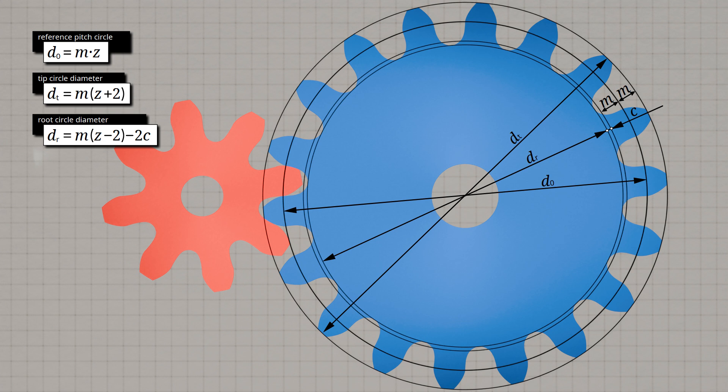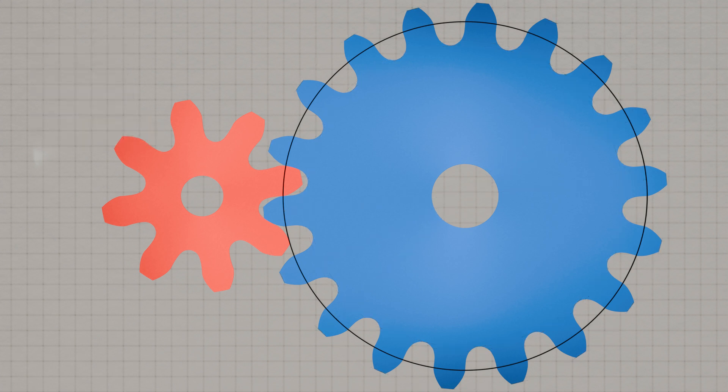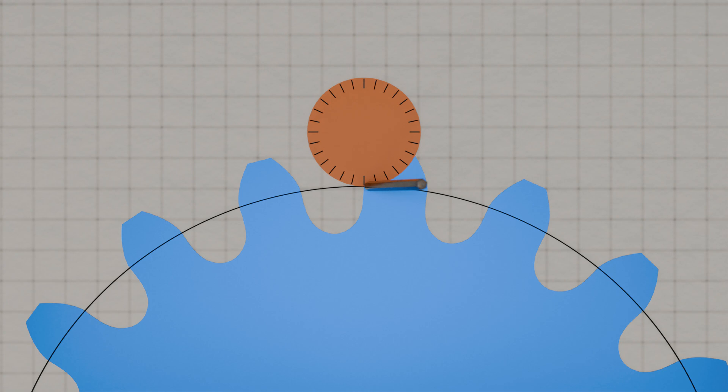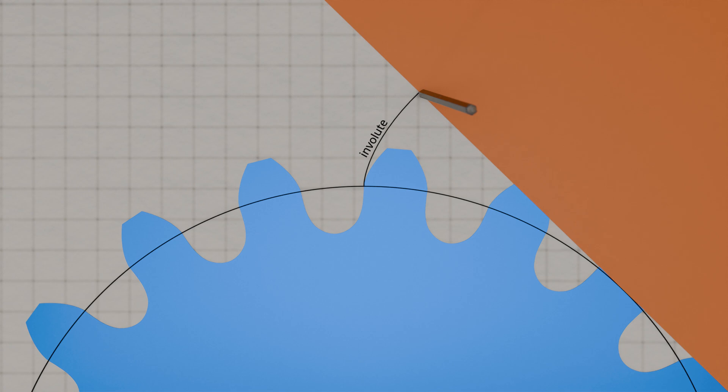The geometric relationships are shown in more detail in the video on the geometry of involute gears. An important special case of a cycloidal gear is when the rolling circle used to construct the epicycloid is made larger and larger. In the extreme case, you end up with a circle of infinite diameter which, because of its infinitely small curvature, is equivalent to a rolling straight line. The resulting epicycloid is called an involute and the gear is called an involute gear. In other words, an involute gear is just a special case of a cycloidal gear.